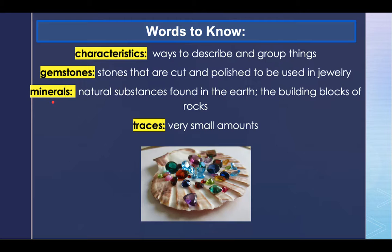The next word to listen for is minerals. Minerals are natural substances found in the earth, the building blocks of rocks. An example: minerals such as diamonds and salt come in many shapes and sizes. And the last word to listen for is traces, or very small amounts. An example: even after cleaning, there were several traces of dust on his glasses.